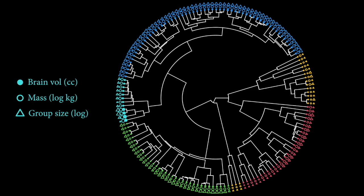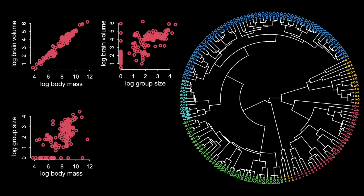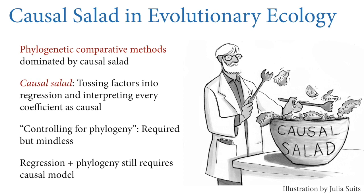There is no general statistical solution to figuring out the relationships among these variables. The status quo in evolutionary ecology is not good — it involves what I call 'causal salad': tossing factors into a regression, often including phylogeny, and interpreting every coefficient as causal. If you've come this far in the course, you know this is not legitimate. In evolutionary ecology it is commonplace to do comparative methods trying to explain patterns of covariation among traits using this approach. It is not legitimate, and we need to do better — not by a new statistical technique, but by thinking causally.